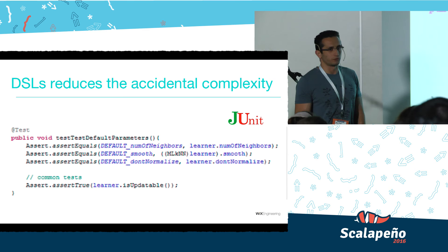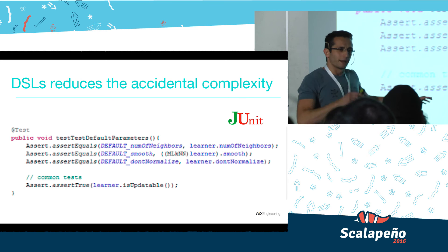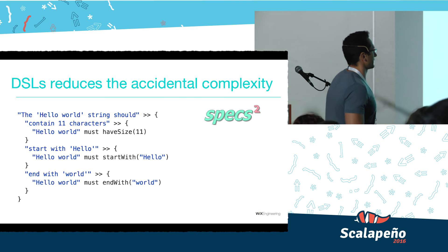For example, here we see some tests using the JUnit framework. I don't want you to go into details — just take a higher-level look. It has some asserts, some structure, but it's not very clear what it does. On the other hand, if we look at the Specs2 test, you can almost immediately see the flow of the test. It looks like English — you can understand the intent of the author.